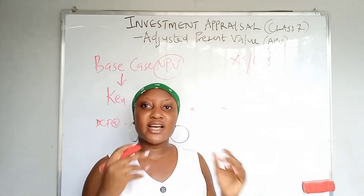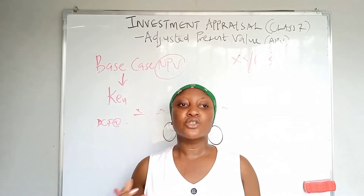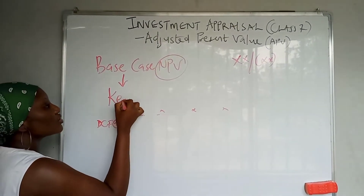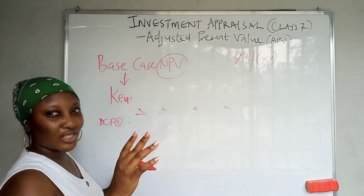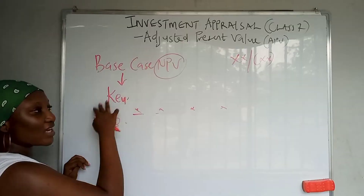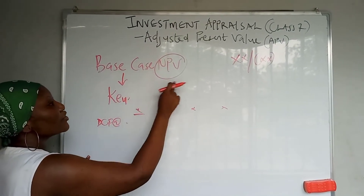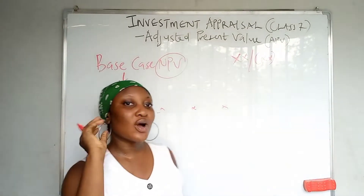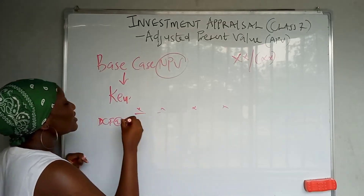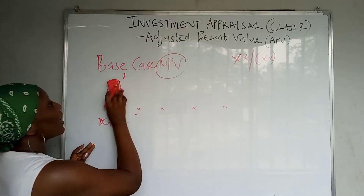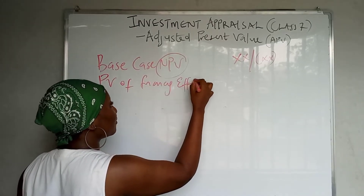The assumption in APV is that equity is the more expensive type of capital — you have equity and debt, shares and loans — and equity is assumed to be more expensive. So we discount using the cost of equity of an ungeared company. When something is ungeared, it means you have stripped out any debt elements. This is different from WACC, which takes into consideration both cost of equity and cost of debt.